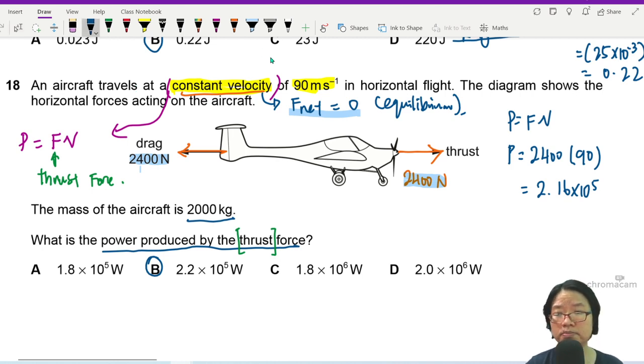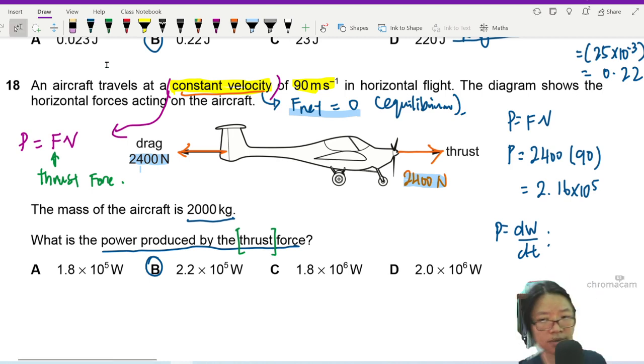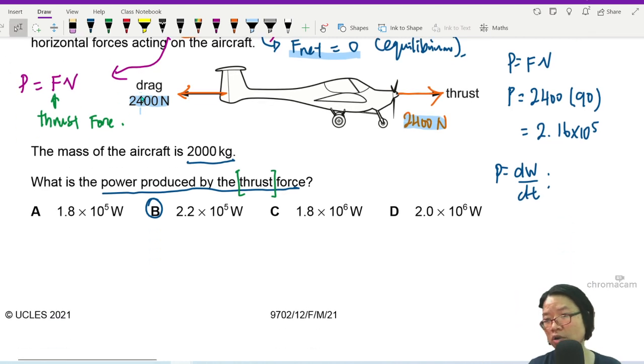Because the definition of power is rate of work done. So it's dW dt. Rate of work done. So your W is equal to Fs.